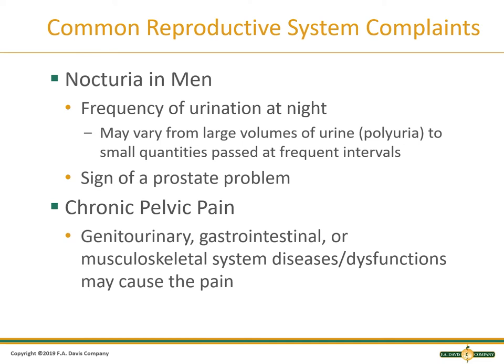Nocturia in men is the frequency of urination at night — it can be in large or small volumes. There may be polyuria if they are a new onset or undiagnosed diabetic. Look for signs of prostate problems: difficulty starting or stopping the stream, dribbling, pelvic pain, GI issues putting pressure on the prostate, and back or musculoskeletal issues causing pain and dysfunction.